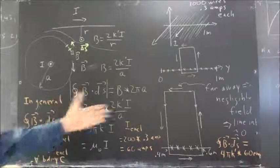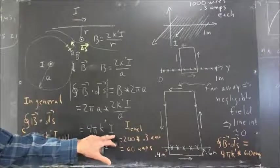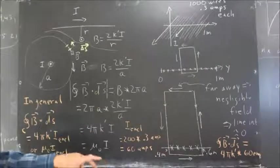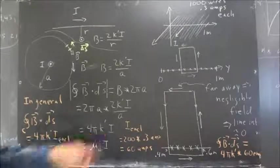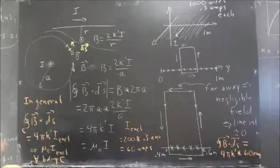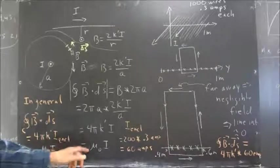And we end up, just multiply this up, 4k prime I, and that's equal to mu naught I, since mu naught is equal to 4 pi k prime. Okay, so that's going to be the result.